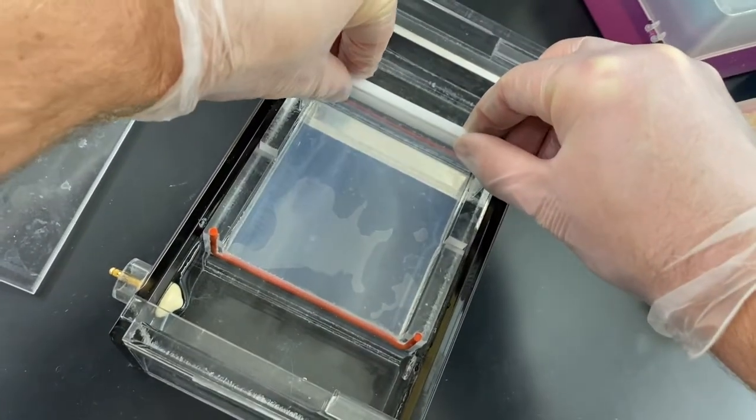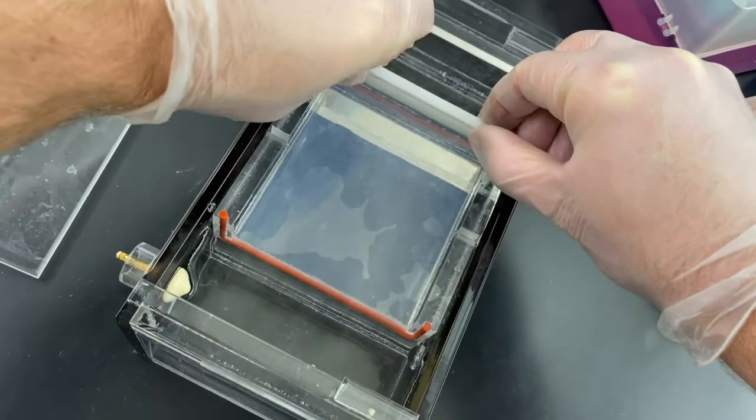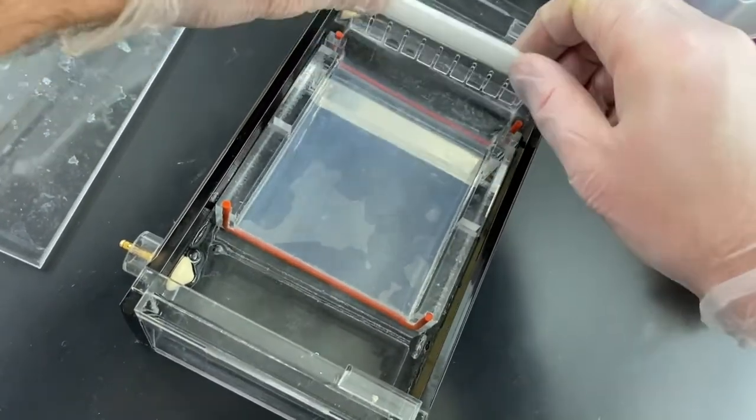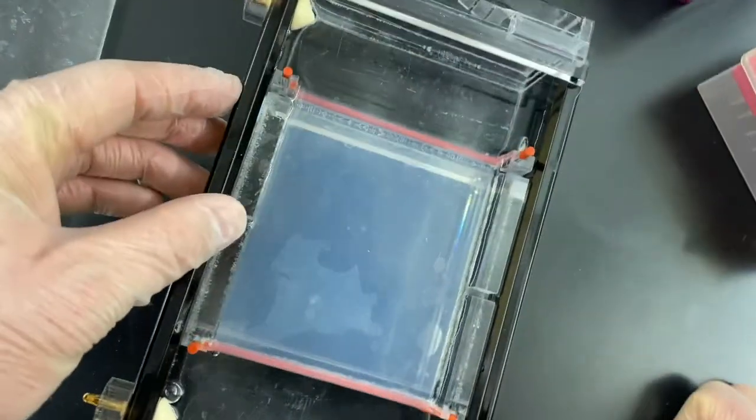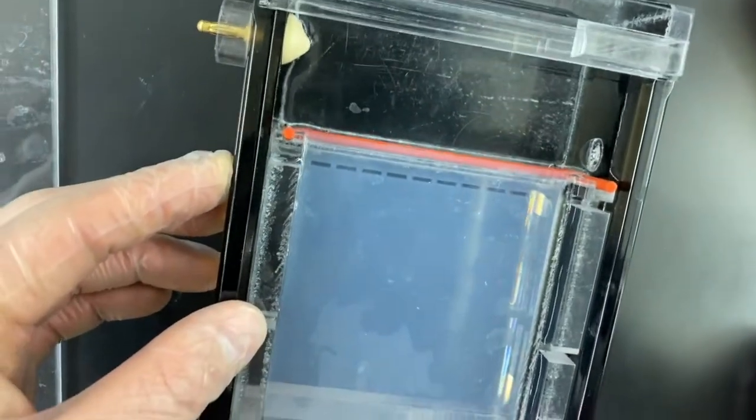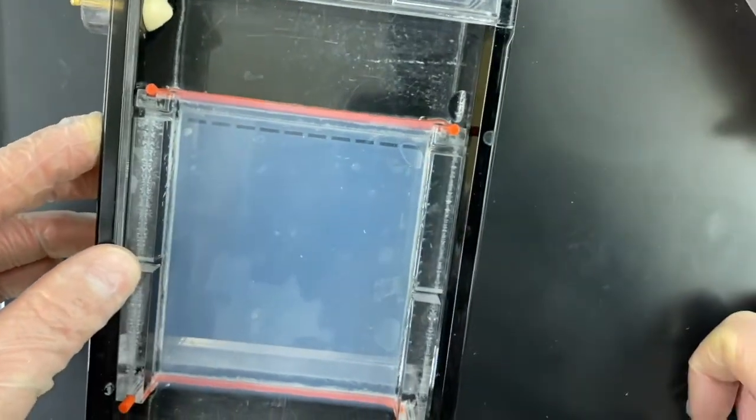So I'm taking the comb out now. I'm going to rock it just a little bit to unseat it. But mostly just want to go straight up. So I got it out of there. As I look down at the right angle here, you can see there are just depressions in there.